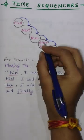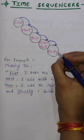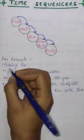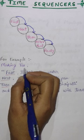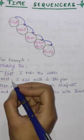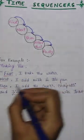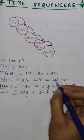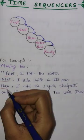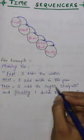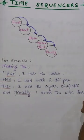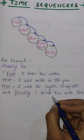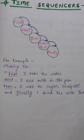For example, making tea: first I take the water, next I add milk in the pan, then I add the sugar and chai pati, and finally I drink tea with toast.